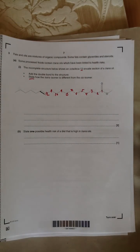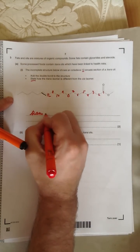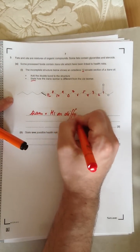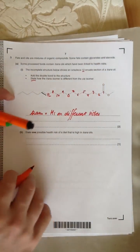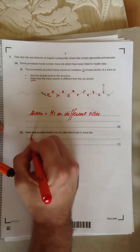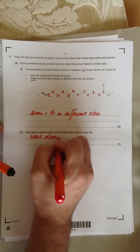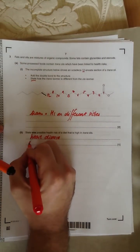State how the trans isomer is different to the cis isomer. The trans isomer has hydrogens on different sides of the double bond. State one possible health risk of a diet that's high in trans oil. These are things like heart disease. Although you will need one answer, you might remember something like a stroke.